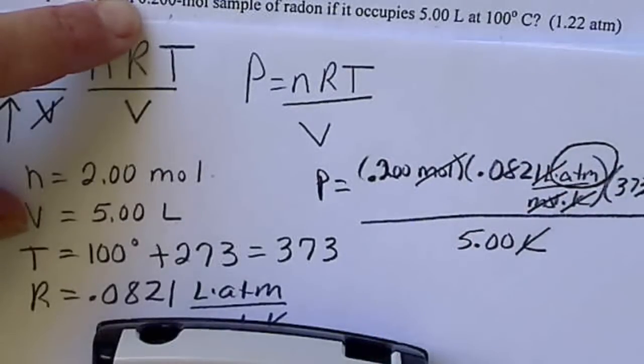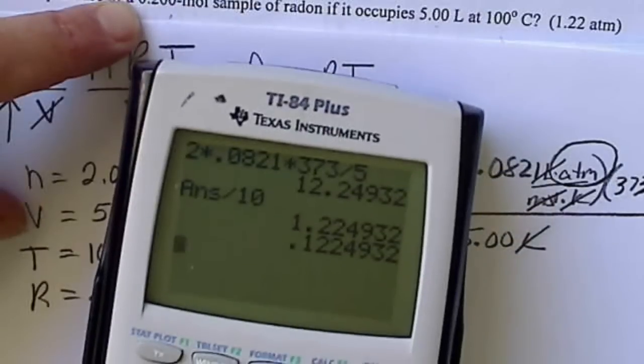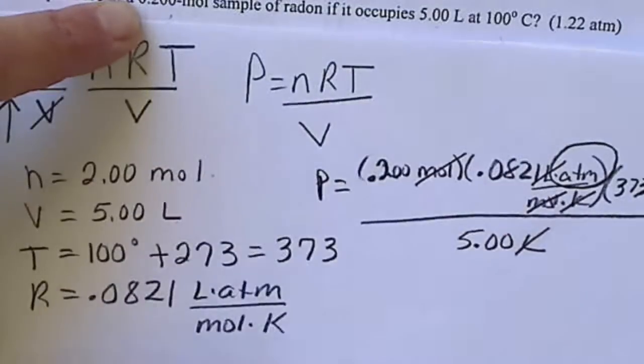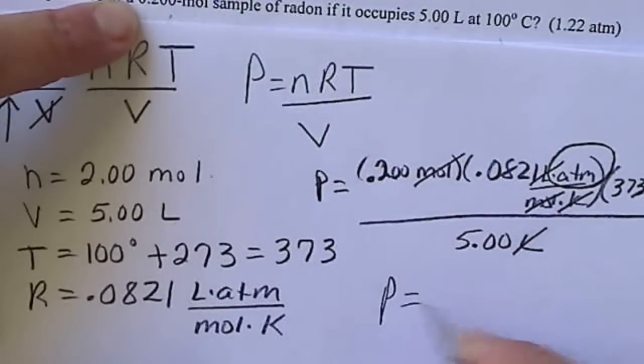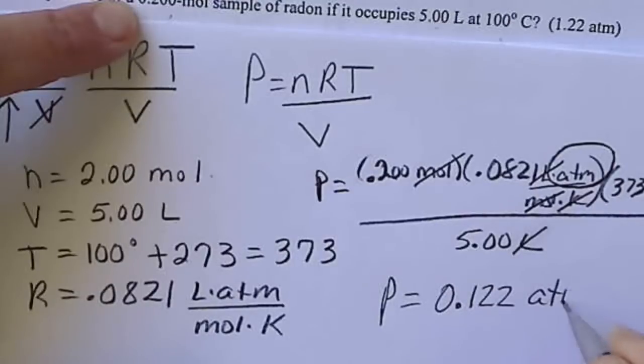So if I would have called that 0.2, then the answer would be 0.122. So my pressure is 0.122 atmospheres.